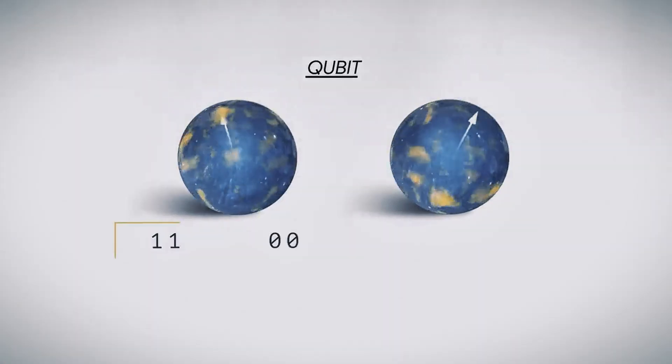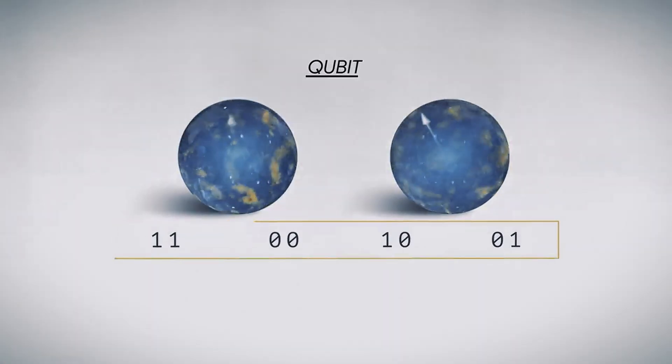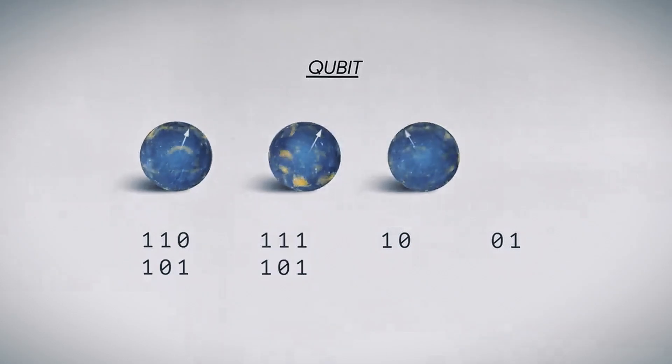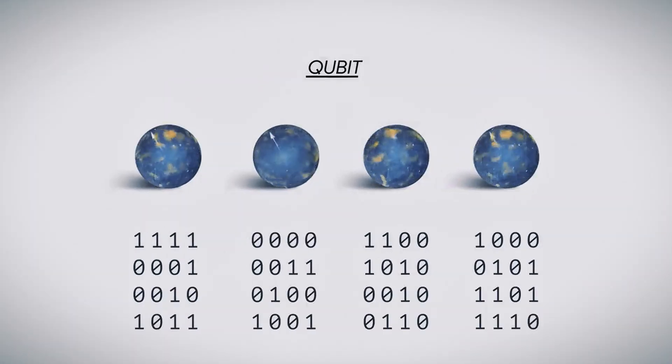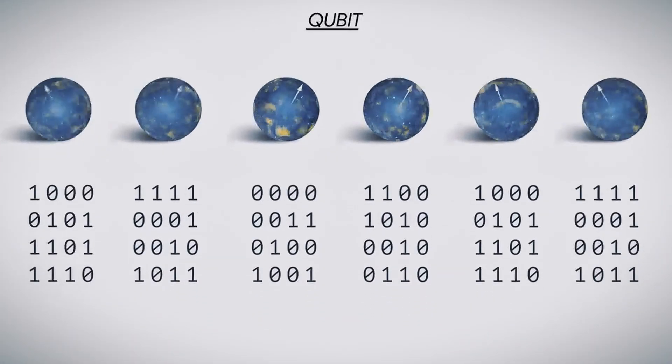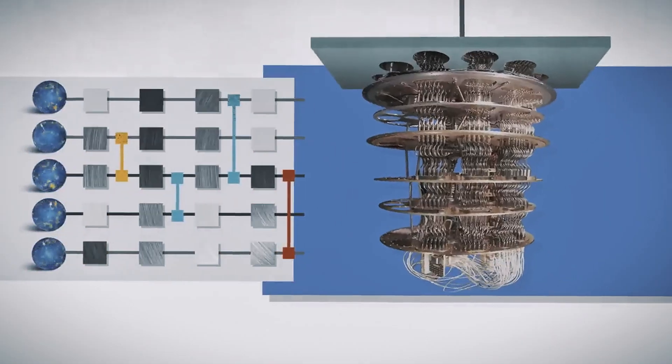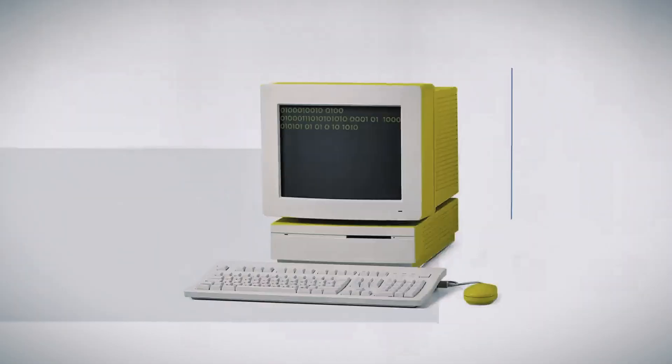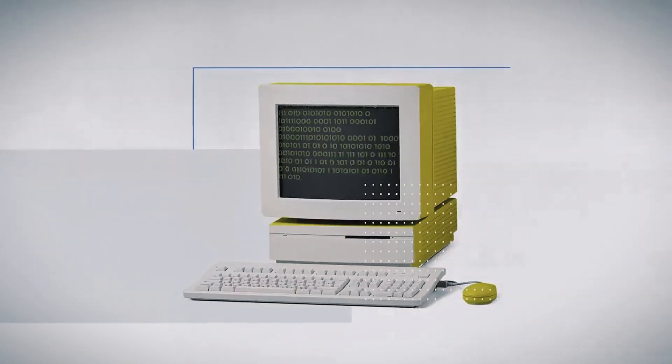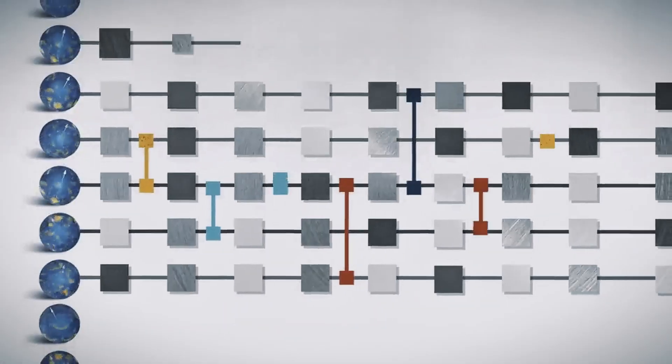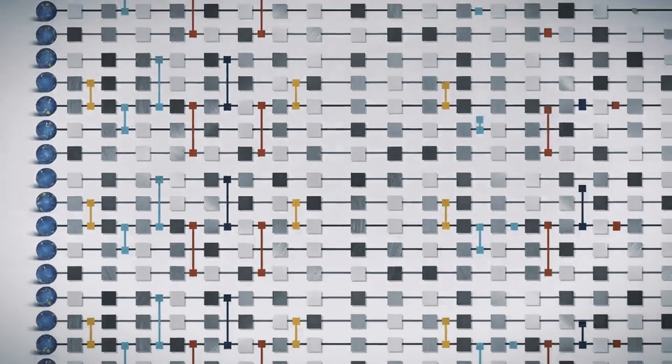But here's where the magic truly happens. When these entangled qubits team up, they turn the impossible into the possible. They allow a quantum computer to perform a multitude of calculations at once. Not just doubling or tripling its speed, but catapulting it into a realm of computational wizardry that classical computers can only dream of.